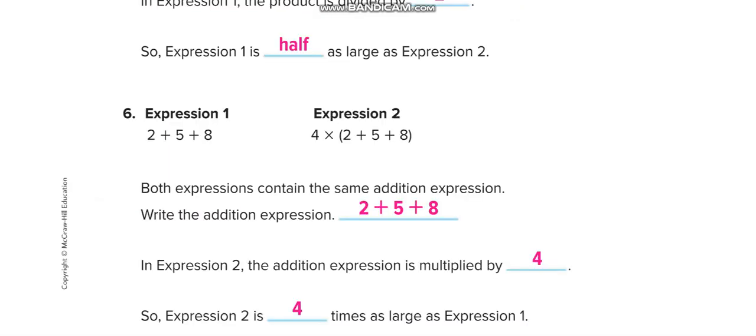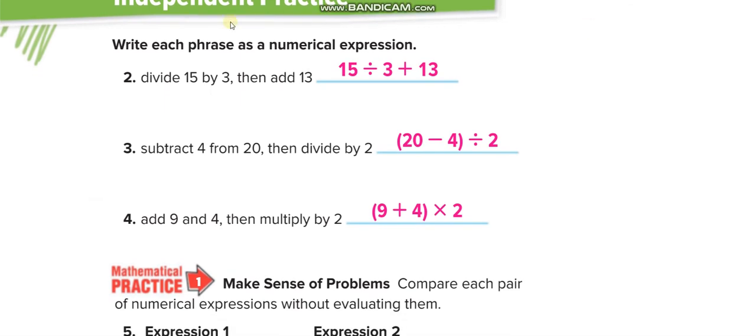Next one. Now here, divide 15 by 3, then add 3. See here, they tell us divide first, so no need of parenthesis. Simple, you write and then you will divide first and then add. But here they said subtract first, 4 from 20. 20 minus 4, then divide 2. So you must put the parenthesis. If you don't put the parenthesis, then the expression will be wrong.